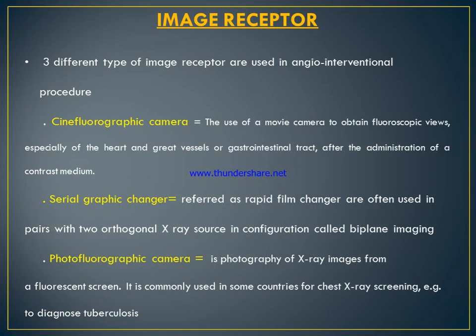Image receptors are used in three types for angiographic interventional procedures. The first is a cine fluorographic camera, the second is a serial graphic changer, and the third is a photo fluorographic camera. The cine fluorographic camera uses a movie camera to obtain fluoroscopic views, especially of the heart and great vessels, after administration of contrast medium. The serial graphic changer, also referred to as a rapid film changer, is often used in a pair with two orthogonal X-ray sources in a configuration also known as biplane imaging.